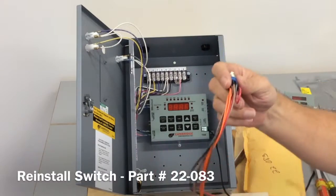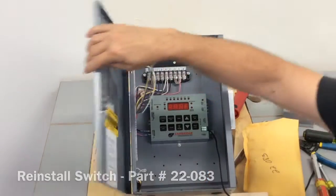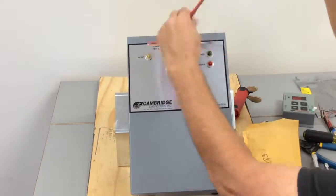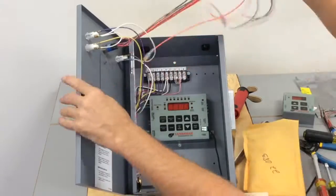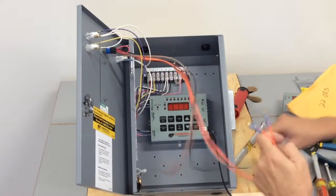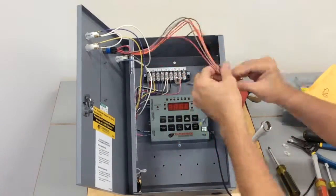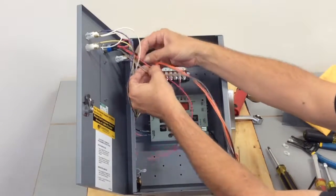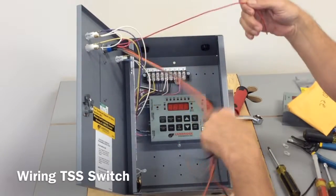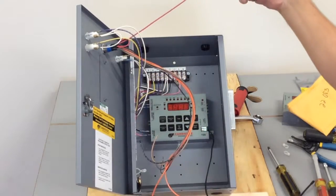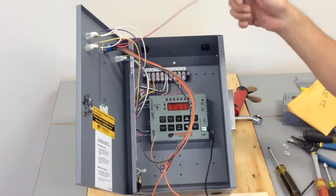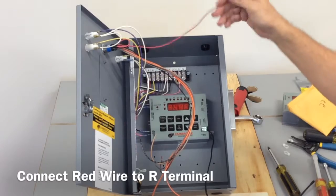It will go in the same way that we removed the other one. Just bring it in through the front. We're going to replace the retaining nut. Our first step is to take our red wire, which is actually on posts one and two, and we will replace it back to our R terminal here.